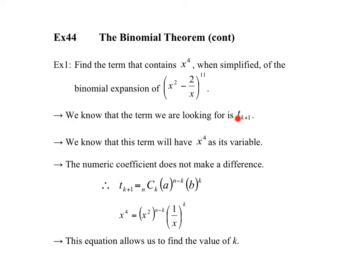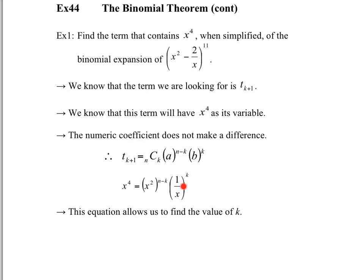We know that this term will have x to the power 4 as its variable and exponent. We know the formula for the term. Notice that nCk only deals with the coefficient, and x⁴ doesn't have a coefficient yet, so I don't have to include nCk. The term x squared will affect the final term because the final term has x⁴ in it. Next, the term 1 over x — it's negative 2 over x, but I only used 1 over x because this negative 2, the coefficient, won't affect the exponent or the variable x. So all I'm dealing with is the things that are going to make x to the power of 4.